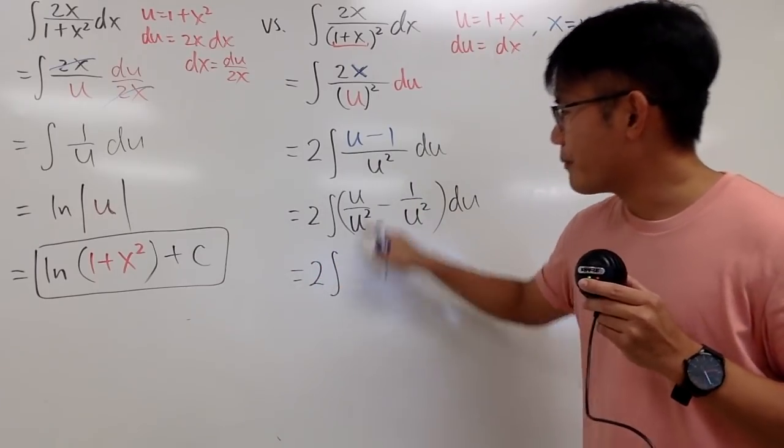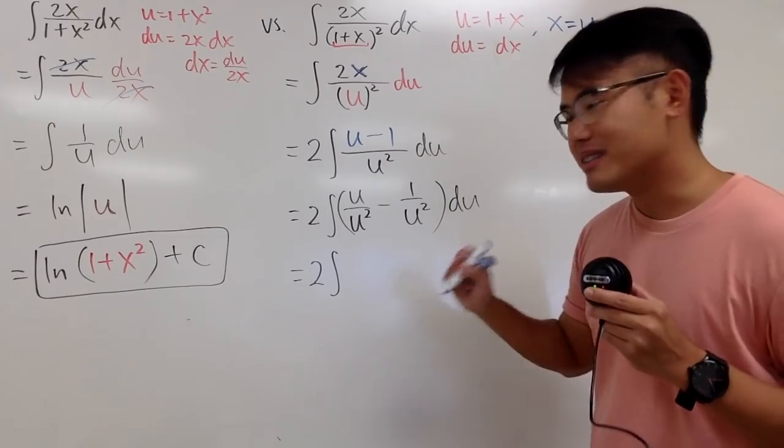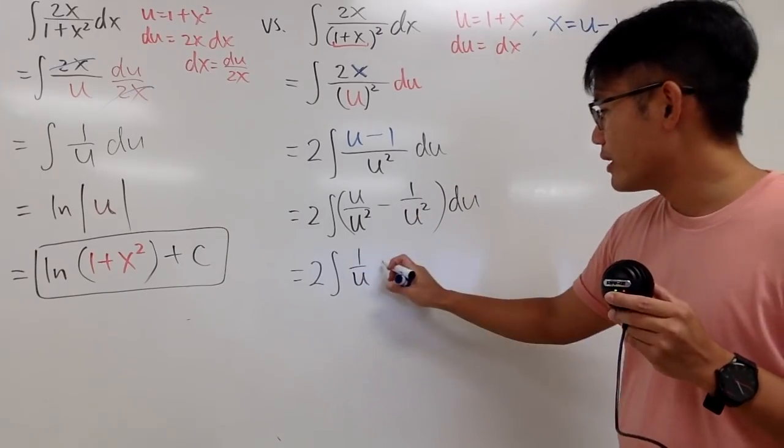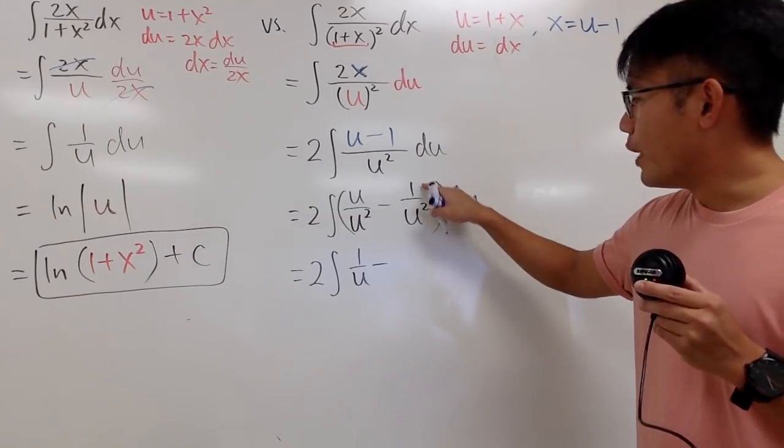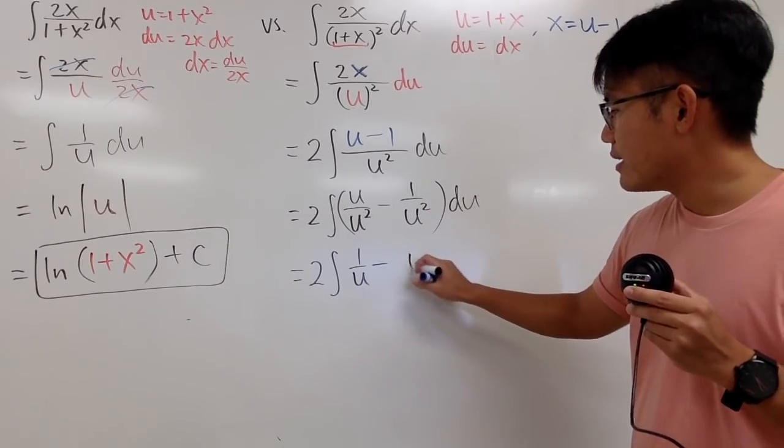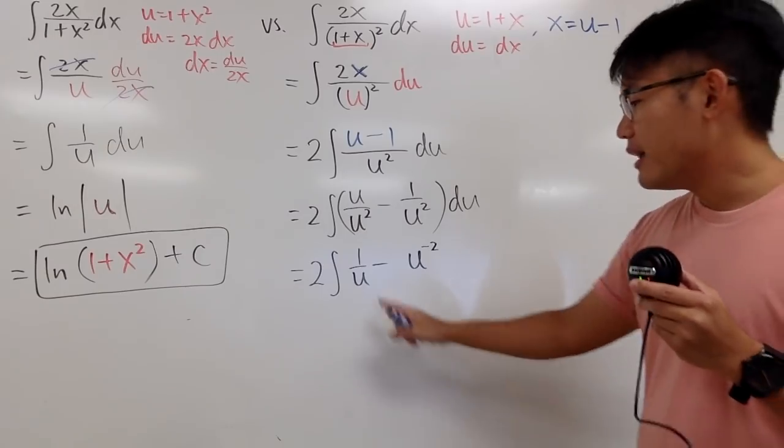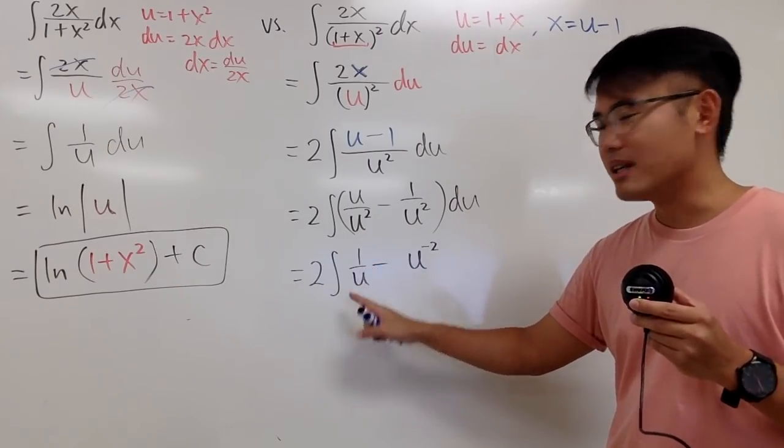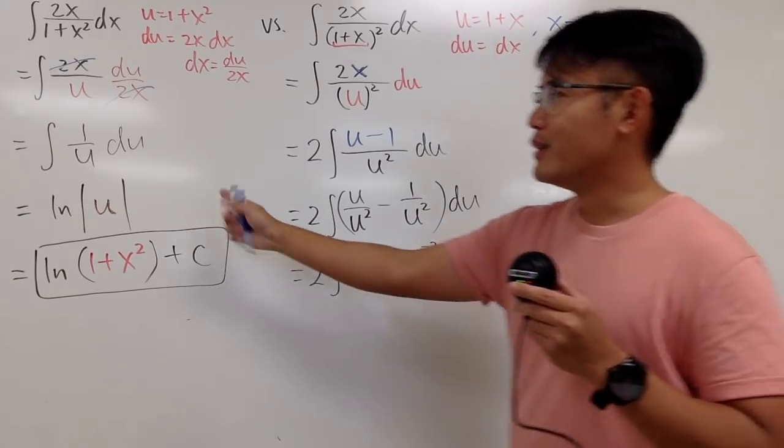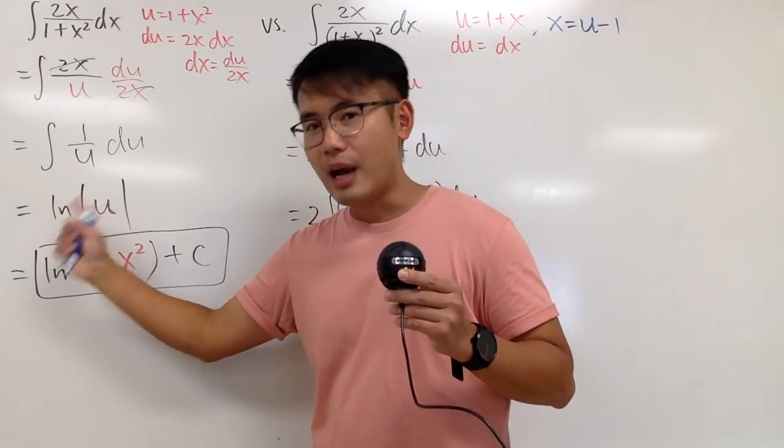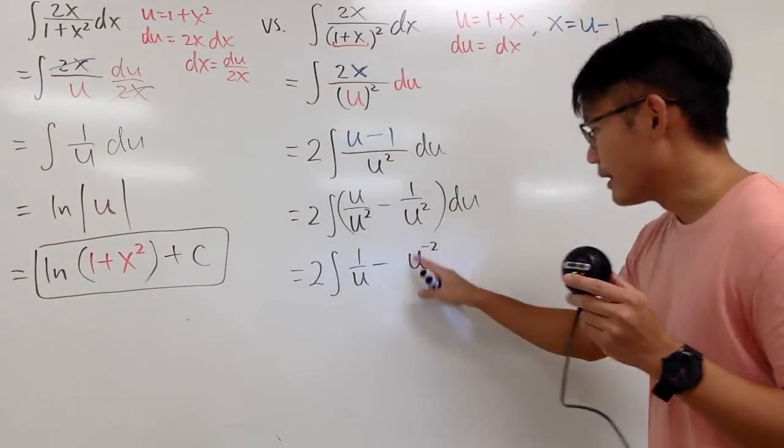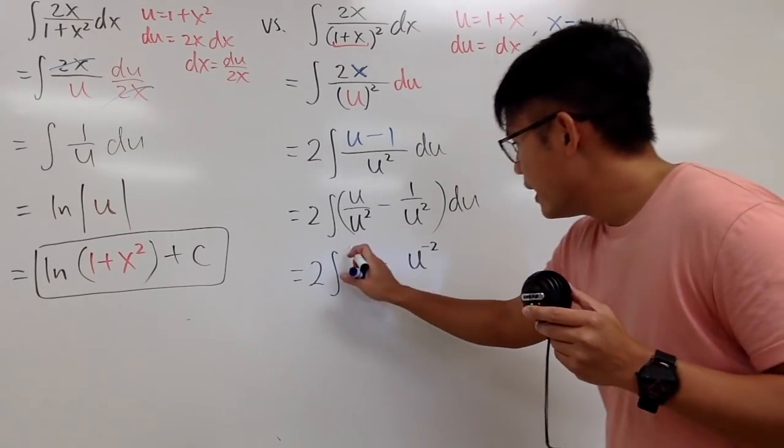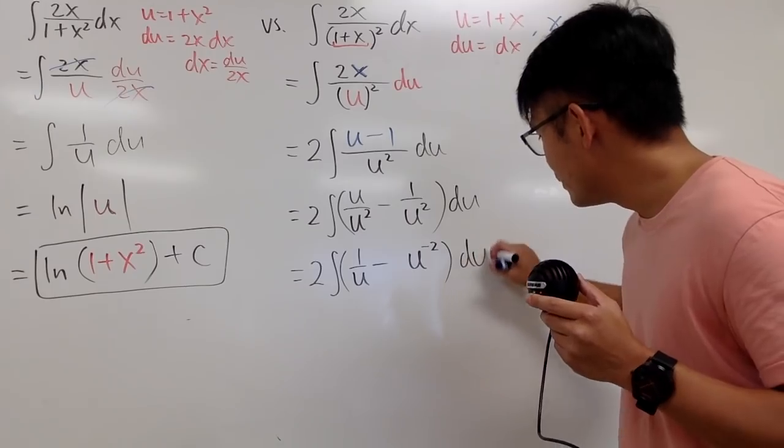You see, this is 2 times the integral. u over u squared is the same as 1 over u. And then let me write down the minus. And for 1 over u squared, let me write it down as u to the negative 2 power. And the reason I didn't write this down as u to the negative 1 power is because this point is better to recognize you get a ln for the answer. But this right here requires the power rule backwards. Anyway, finally, we are ready to integrate.